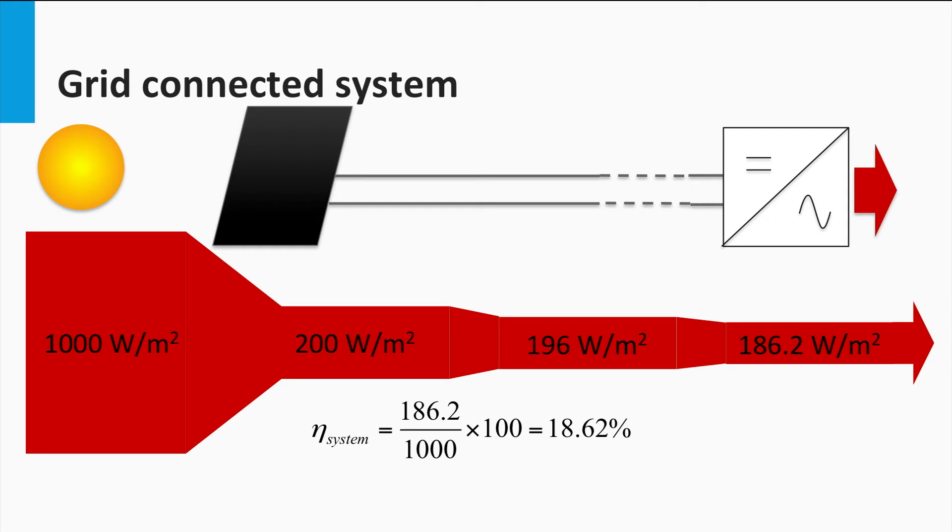This means that the incoming irradiance at 1000 watts per square meter is processed by the PV system to give 186.2 watts per square meter. In other words, the overall system efficiency is 186.2 divided by 1000 watts per square meter, which is 18.62%.